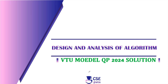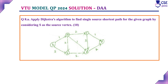Welcome to CSU Guru. In this session, we will discuss Design and Analysis of Algorithm BTU Model Paper 2024 Solution. Question number 8: Apply Dijkstra's algorithm to find the single source shortest path for the given graph by considering S as the source vertex.